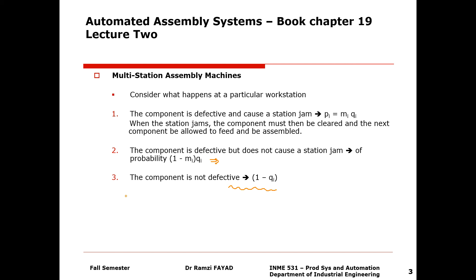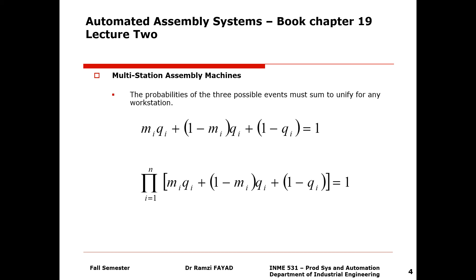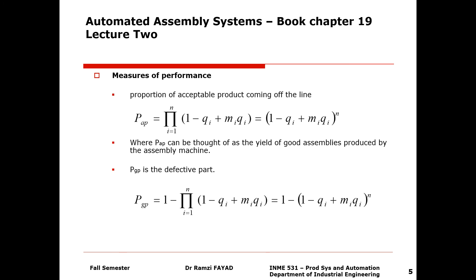So here the three possible events for a component are: probability it is defective is q; probability it is not defective is 1 minus q. The q value is then separated into two cases: m times q, which is the probability it is defective and jams the system; and 1 minus m times q, it is defective but does not jam the system. We sum all values across all n stations, giving us the proportion of acceptable product coming off the line.